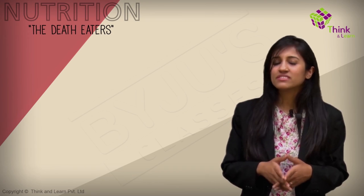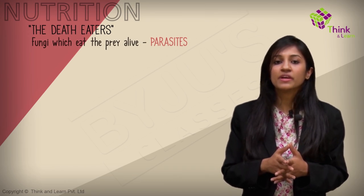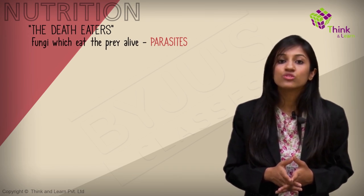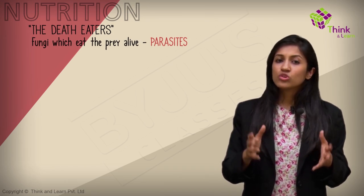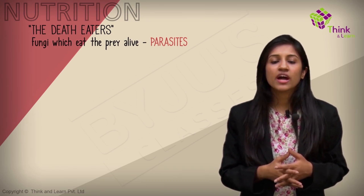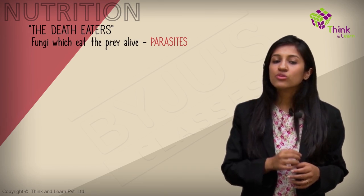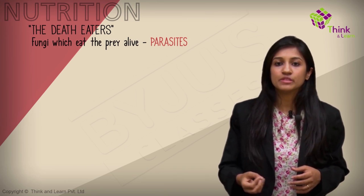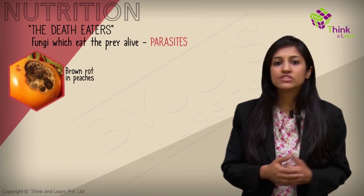In some cases, they're actually okay with their prey being alive. In those cases, they're called parasitic. Most parasitic fungi are microscopic and may be better known by their symptoms, like brown rotten peaches.